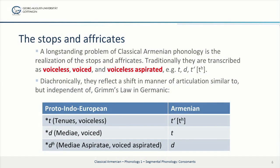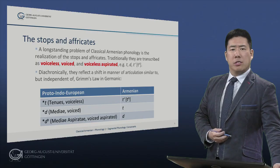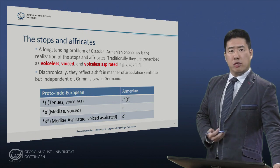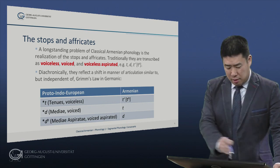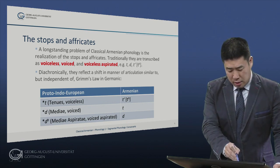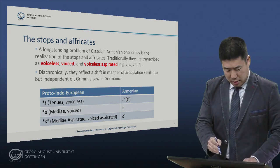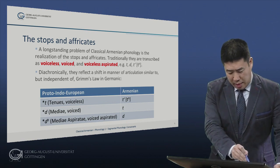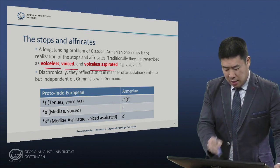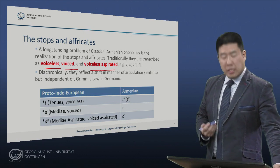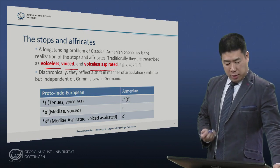A long standing problem of classical Armenian phonology is the realization of the stops and affricates. Traditionally they are transcribed as voiceless, voiced, and voiceless aspirated — for example, T, D, and T.